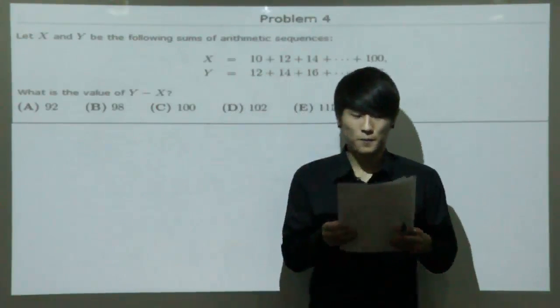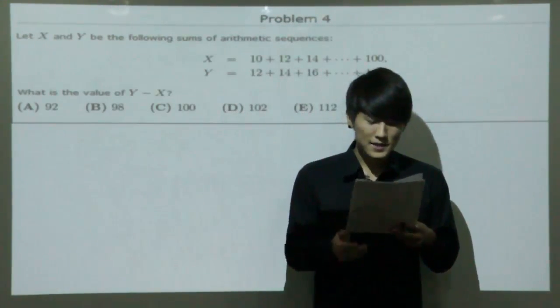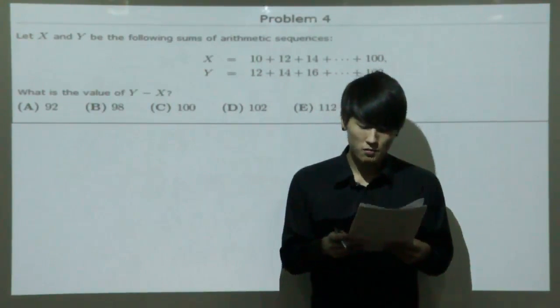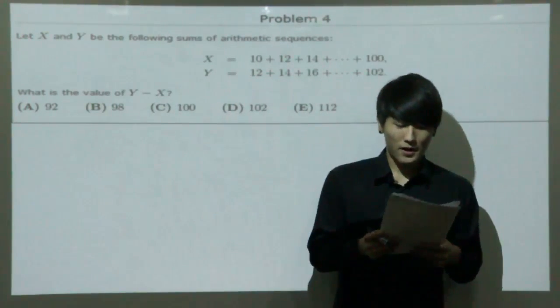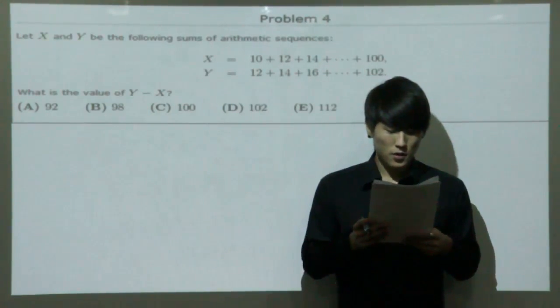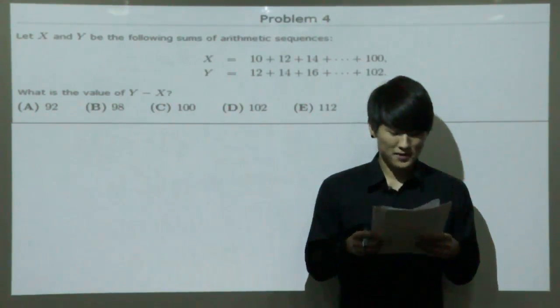Question number 4. Let X and Y be the following sums of arithmetic sequences. X equals 10 plus 12 plus 14 plus up to 100. Y equals 12 plus 14 plus up to 102. What is the value of Y minus X?